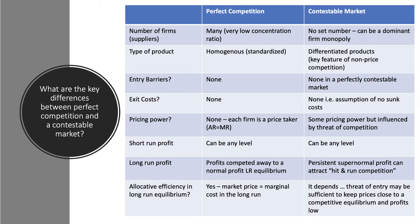In contestable markets, profits can continue — you can make an abnormal return. However, if you're making a persistent supernormal profit and a rival firm outside the market thinks it can come in and take away some of that profit, then there is the threat of some form of hit-and-run competition: easy access to the market to take away the profits.